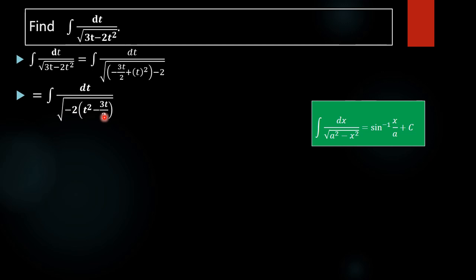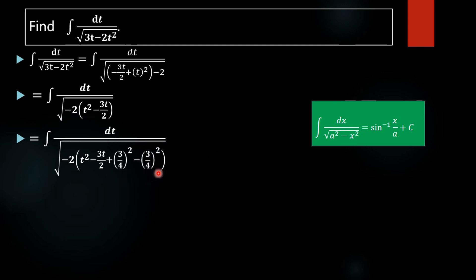To apply the completing the square method, we take the coefficient of t, which is negative 3 by 2, and make it half, giving 3 by 4. We then add and subtract the square of 3 by 4 inside the bracket. Adding and subtracting the same value gives zero, so there is no alteration to the expression.